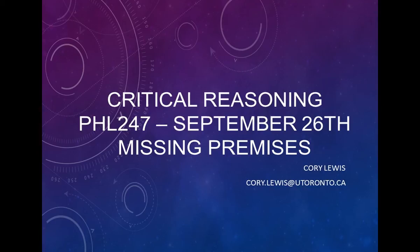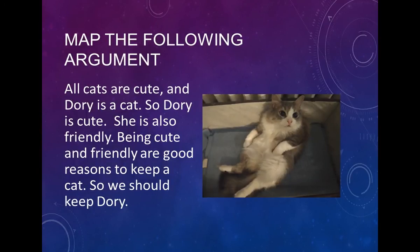The first job is to do these slightly more complex argument diagrams. We'll start here — this is my cat Dory. So is she adorable? All cats are cute and Dory's a cat, so Dory is cute. She's also friendly. Being cute and friendly are good reasons to keep a cat, so we should keep Dory. This is ultra-simple language so that the structure of the argument should be completely clear. You should be able to look at this and say, I know exactly what the conclusion is. What is the conclusion of this argument?